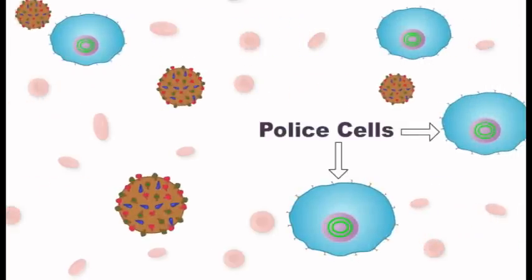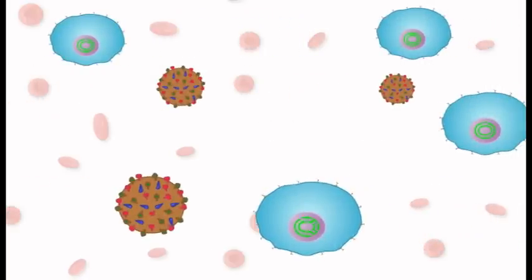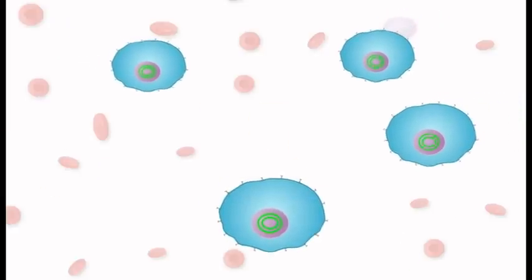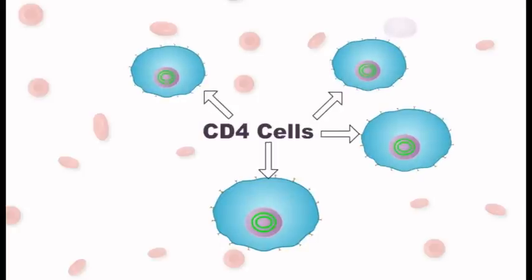Tiny police cells are present in the blood to protect a person from germs that cause infections such as TB and the flu. These police cells are called CD4 cells.